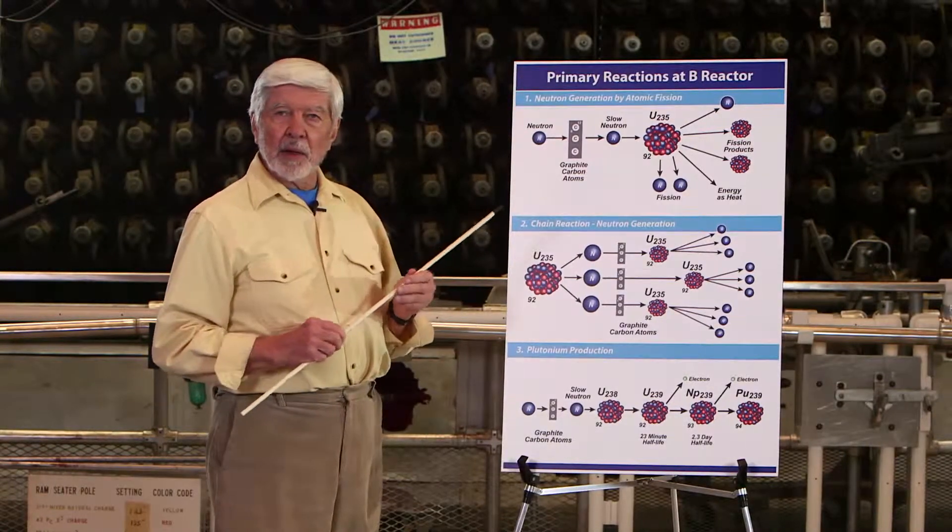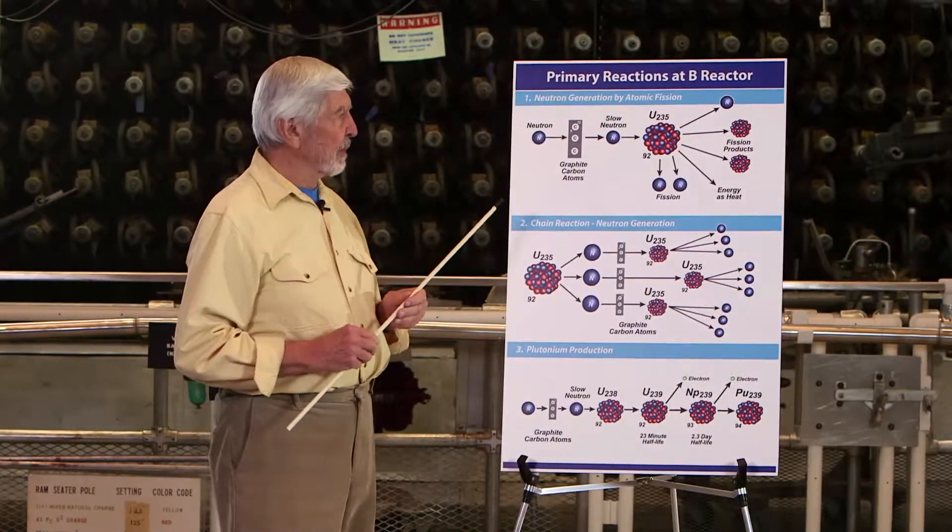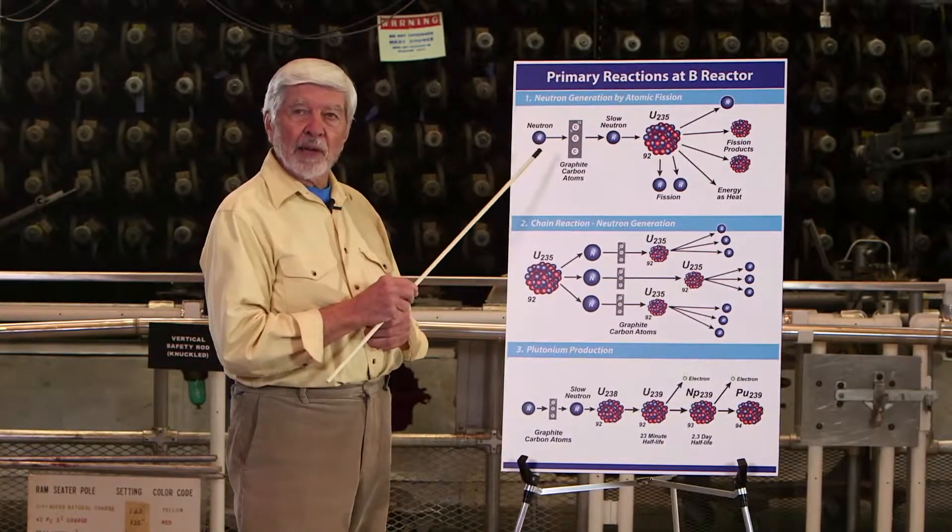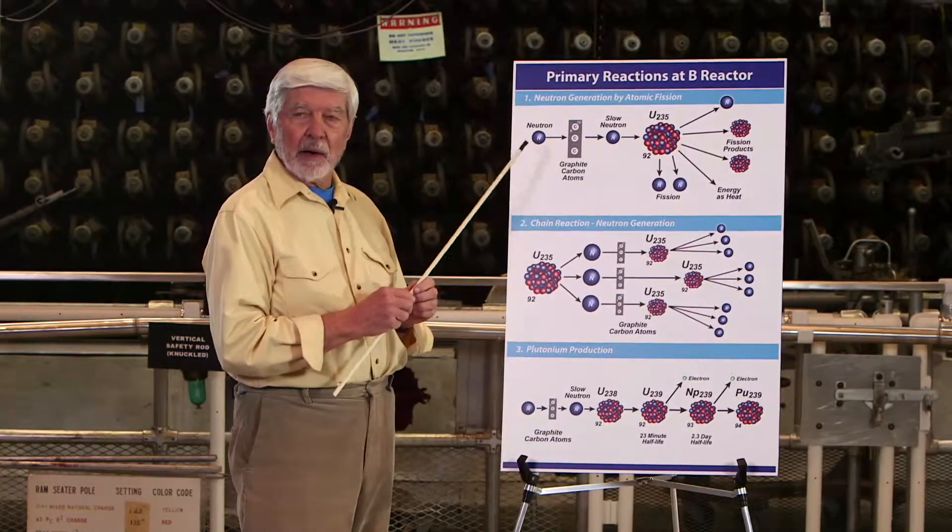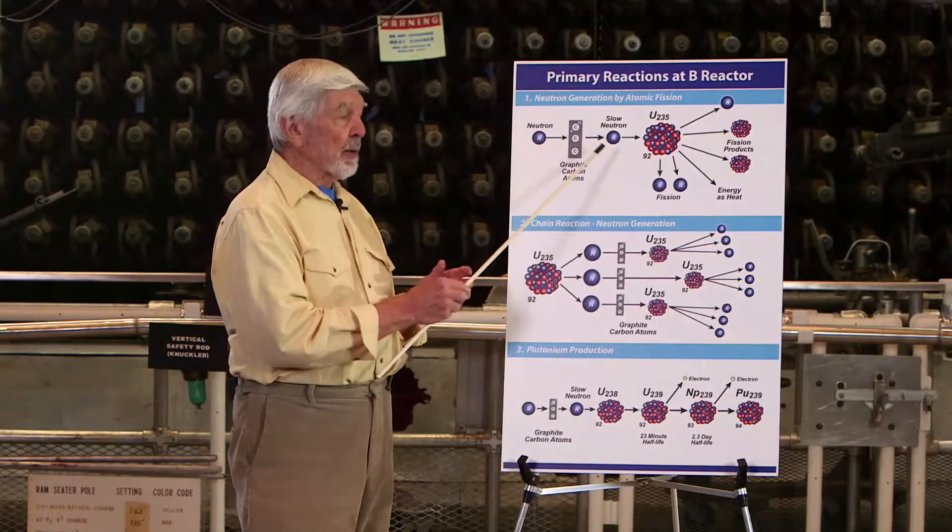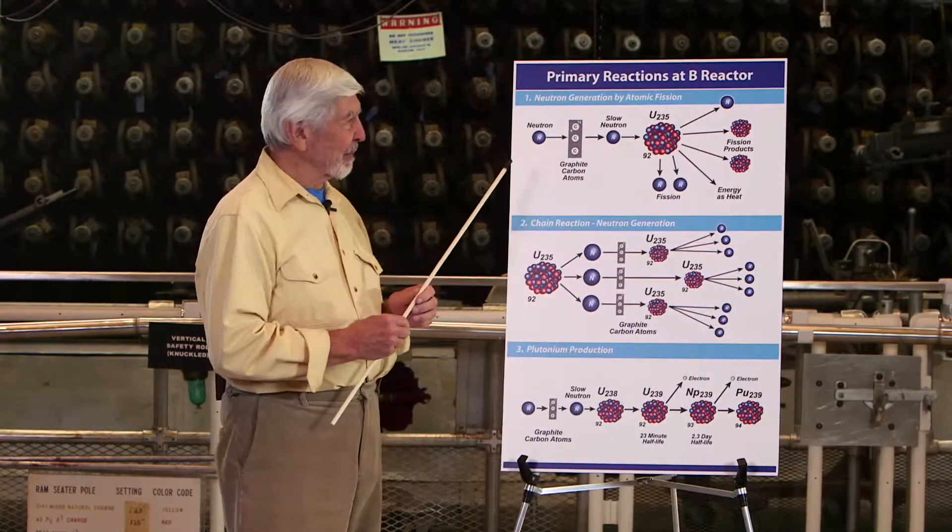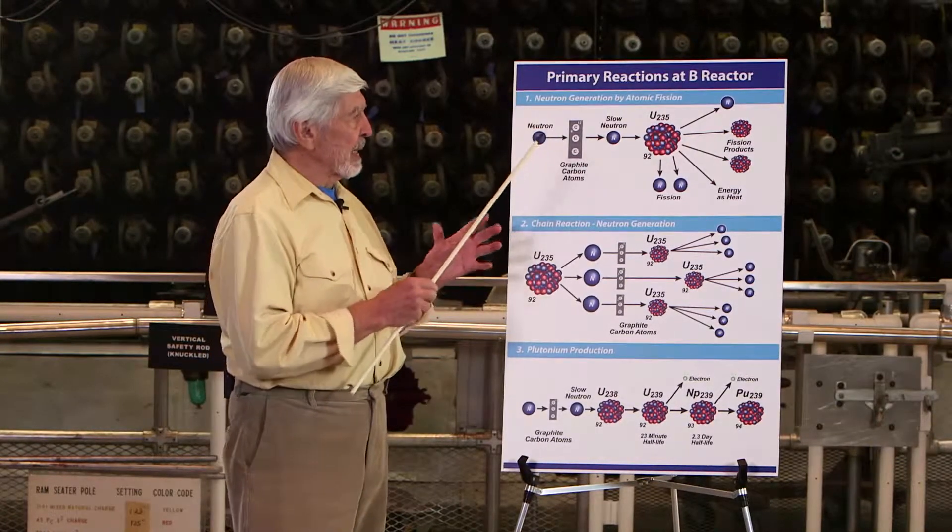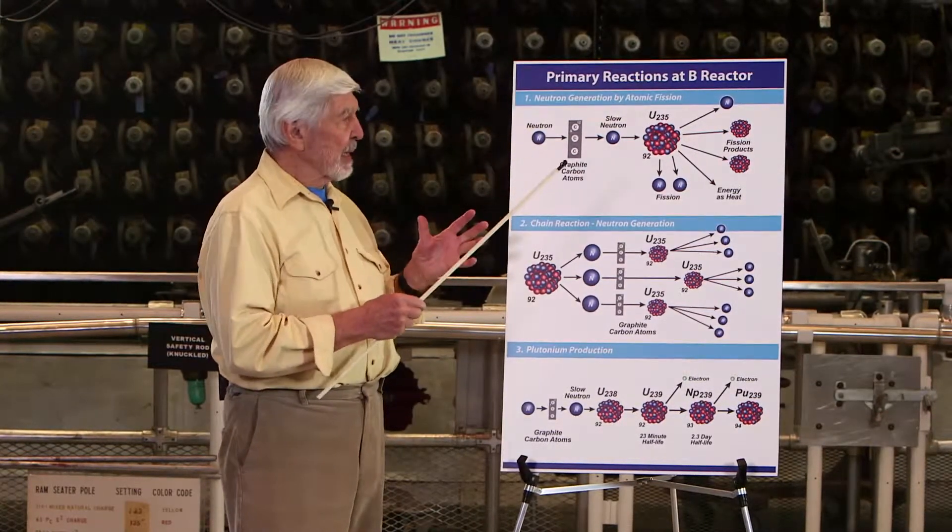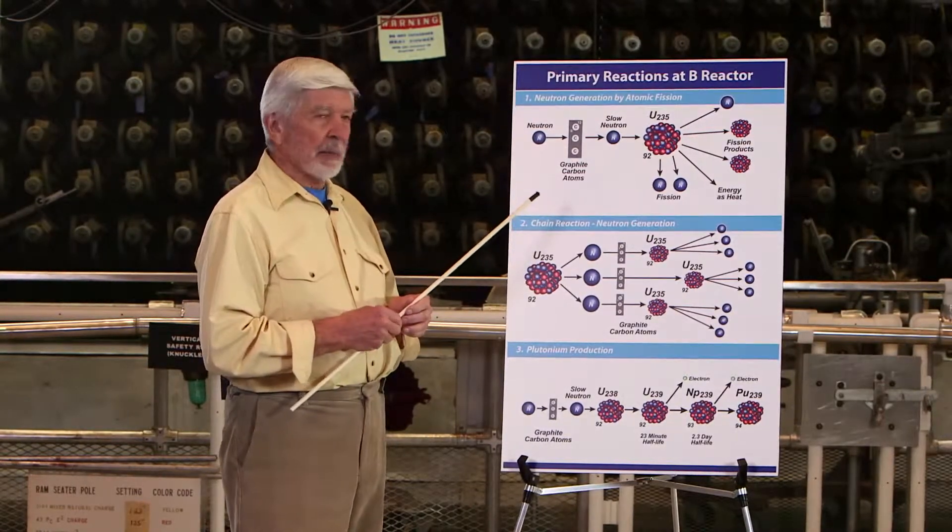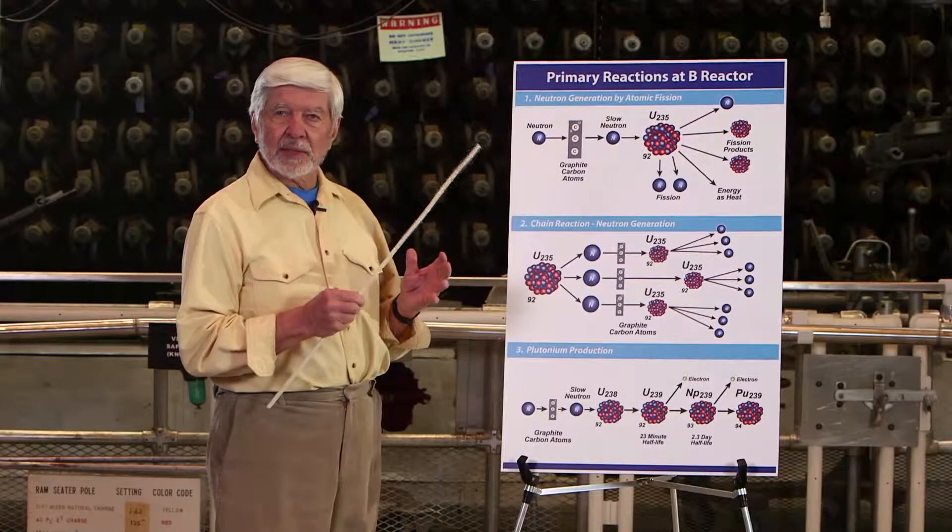Speed and time are a little different in physics. A fast neutron travels at 45 million miles an hour. A slow neutron travels at 5,000 miles an hour. Speed is different in nuclear physics. Time is different.